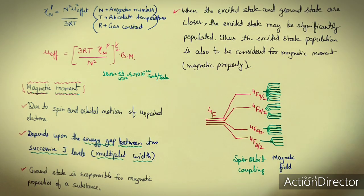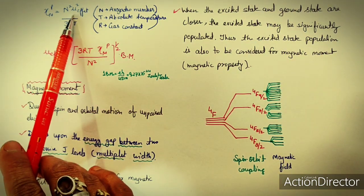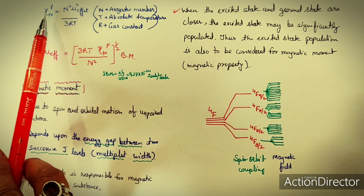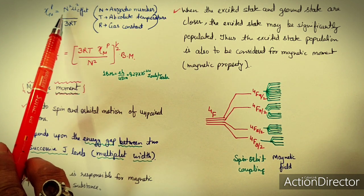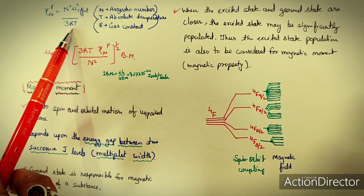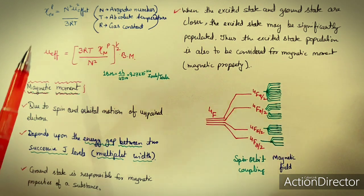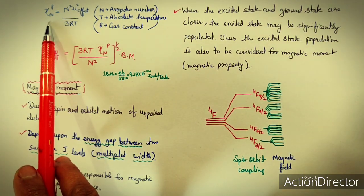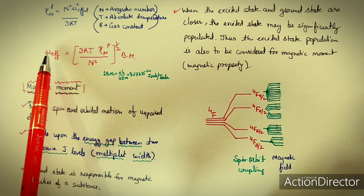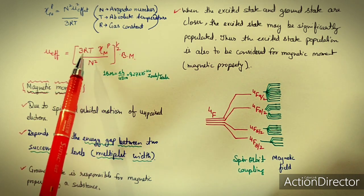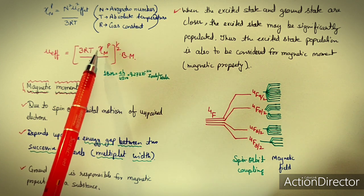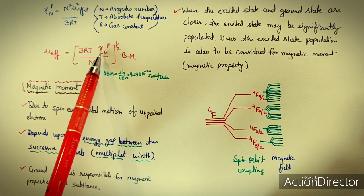If we know the paramagnetic susceptibility, there is a relationship between the effective magnetic moment mu_eff and the paramagnetic susceptibility: chi_m = N²·mu²/(3RT), where N is the Avogadro number, R is the gas constant, and T is the absolute temperature. So if we know the molar susceptibility experimentally calculated by Gouy's or Faraday's method, we can calculate the effective magnetic moment.